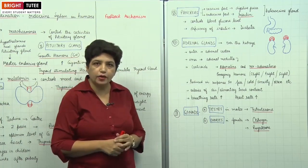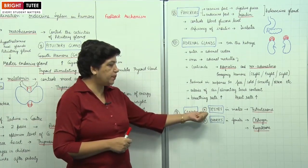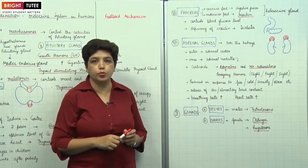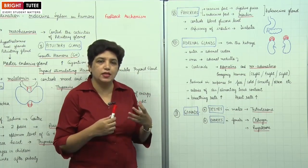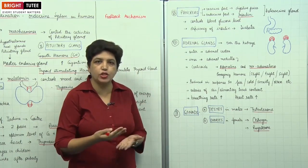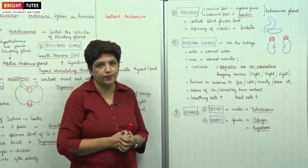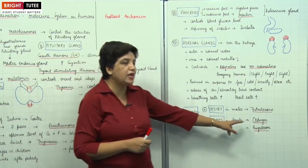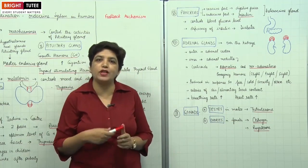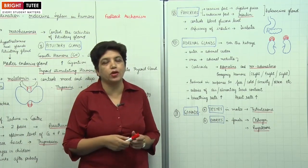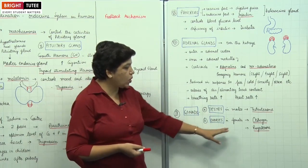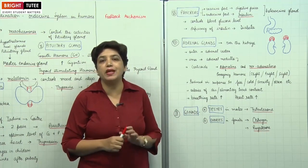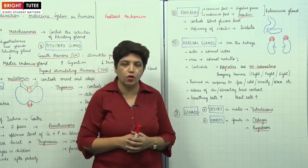The next are the gonads. In males, there is a pair of testes which produce the hormone testosterone, responsible for all the secondary sexual changes observed during puberty. In females, there are a pair of ovaries which release the hormone estrogen, responsible for the development of secondary sexual organs in females. The ovaries also release another hormone called progesterone, which helps in the maintenance of pregnancy and is called the pregnancy hormone.